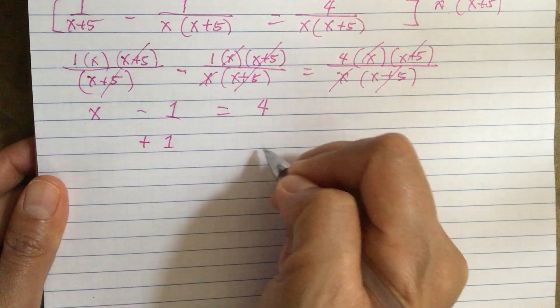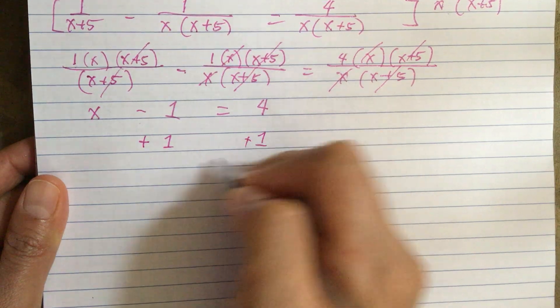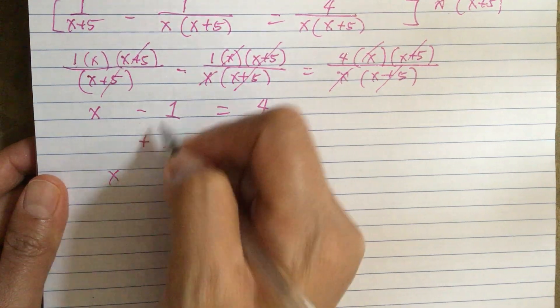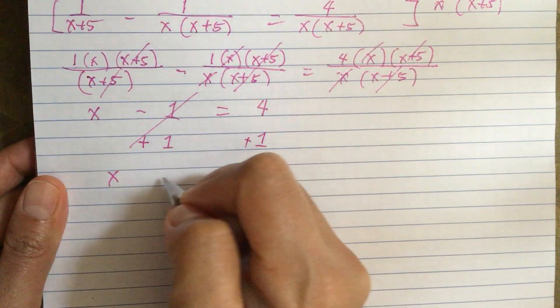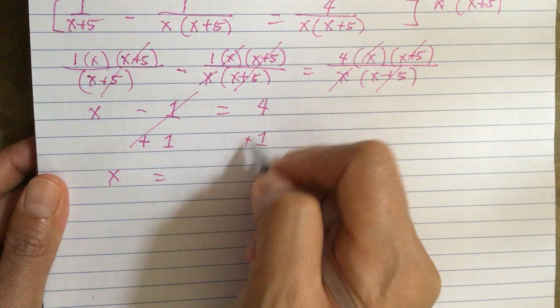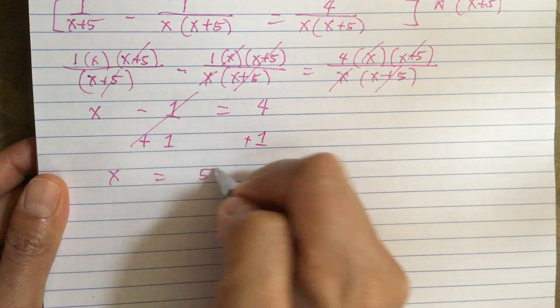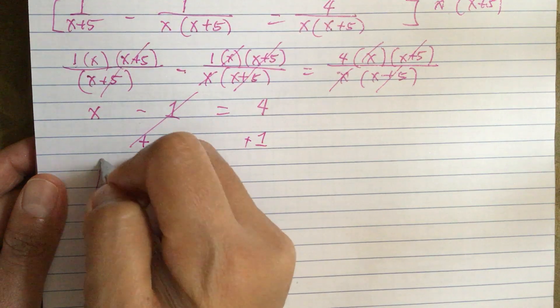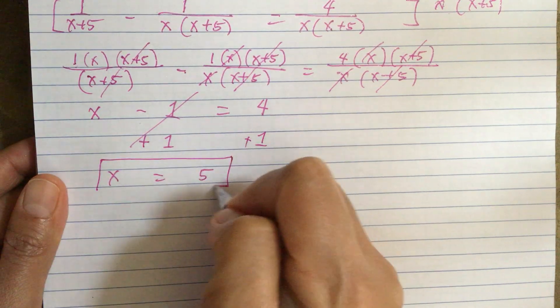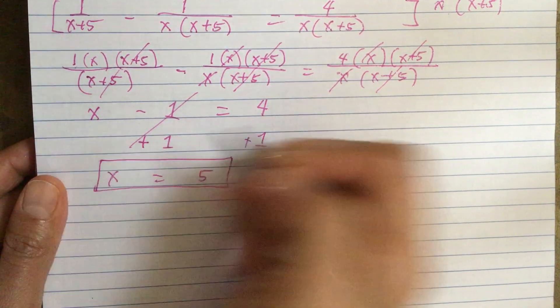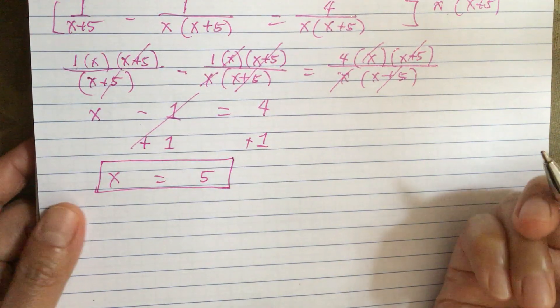So now we have x minus 1 equals 4. Adding 1 to both sides gives us x equals 5. That's our answer.